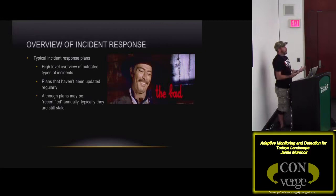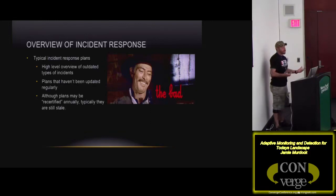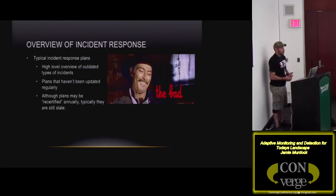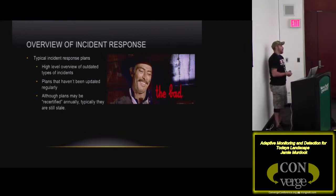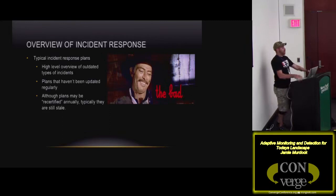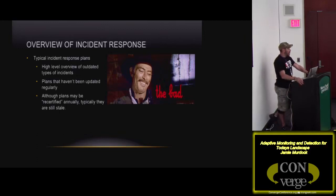A bad plan: there's a high-level overview with outdated types of incidents — 'Here's what we do if we see this worm,' 'If a computer gets a virus, here's how we handle that computer.' The plans aren't updated regularly. You'll have Joe Smith listed as the Chief Information Security Officer with his phone number, but he hasn't been with the company for five years and his information is still in there as the primary point of contact. And although the plans may be recertified on an annual basis, typically they're still stale.